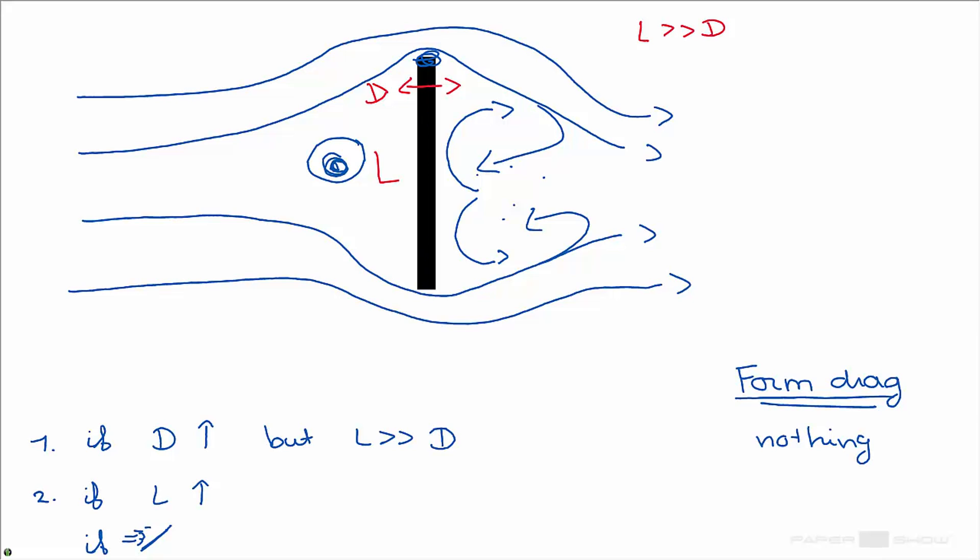What if the length would be larger? In that case this part would have more length, therefore the air also has to go out of the way more. And as we said, form drag is created when the fluid or gas has to deflect from its normal path.